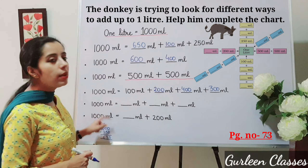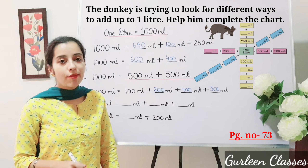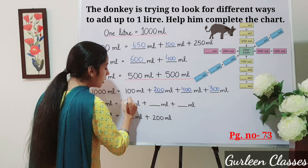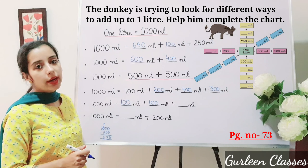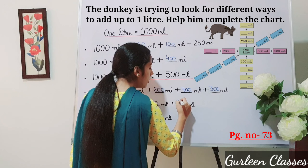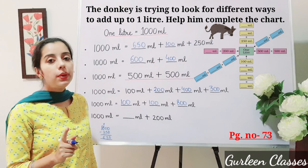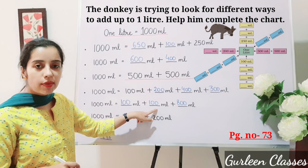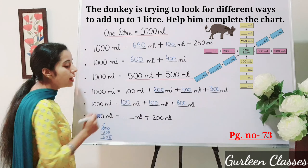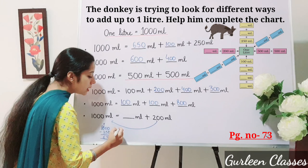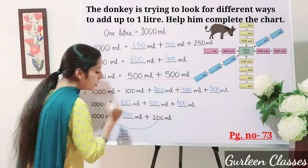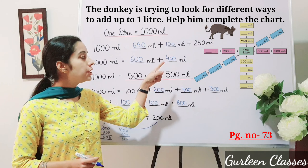1000 milliliter equals dash plus dash plus dash — write three numbers. Suppose 100 milliliter here and 100 milliliter here: 100 plus 100 is 200. Then 1000 minus 200 is 800. Write 800. After adding: 800 plus 100 is 900, plus 100 is 1000. Next: 1000 milliliter equals dash plus 200. So 1000 minus 200 is 800 — write 800. Write these answers in your Maths NCRT book, page number 73.